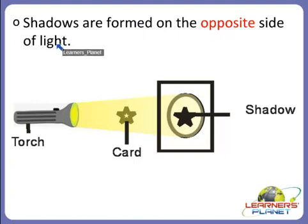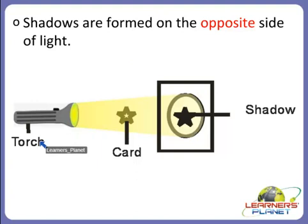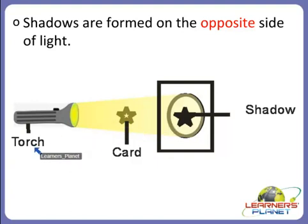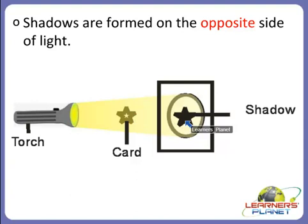Here we will see something very interesting. For example, this is a torch and this is a star-shaped card — and this is its shadow. A torch light shines onto a star-shaped card, and then because of the light of this torch, a shadow is formed on the screen behind the card.